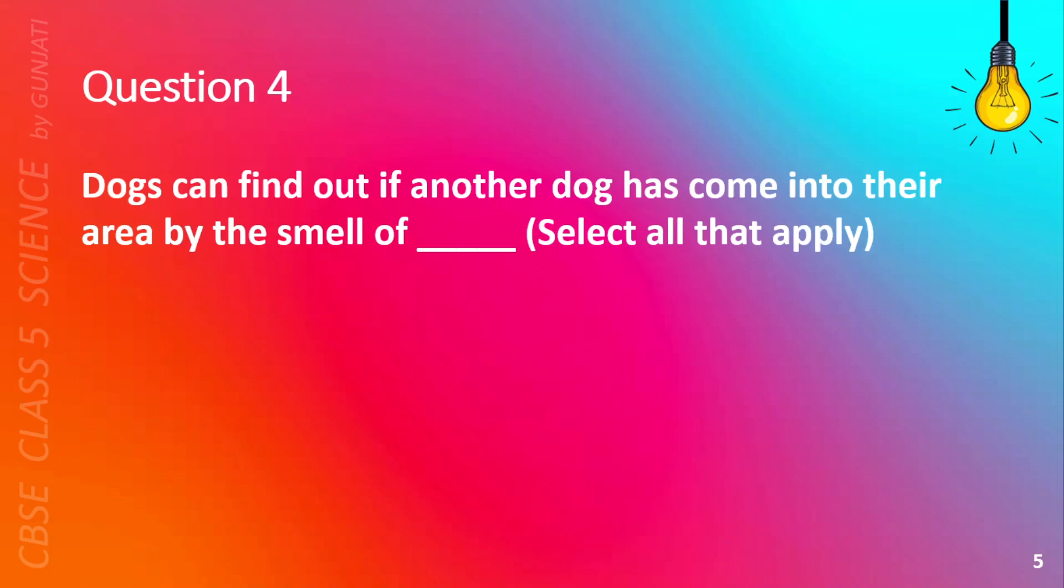Question 4. Dogs can find out if another dog has come into their area by the smell of blank. Select all that apply. A. Urine, B. Potty, C. Water, or D. Food. The correct answer is A. Urine and B. Potty.